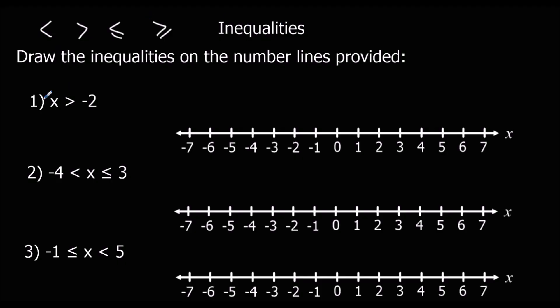Here it says x is on the bigger side — x is bigger than minus 2. So here's minus 2 on the number line, and x is bigger.